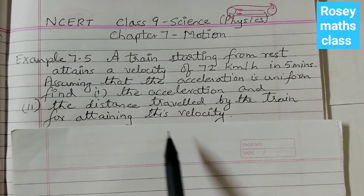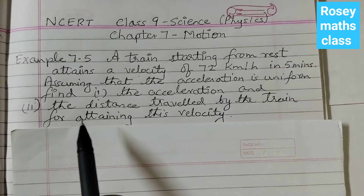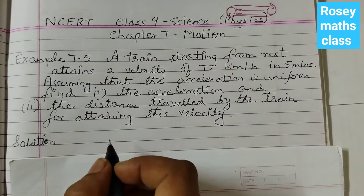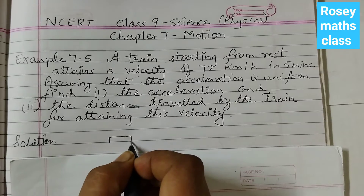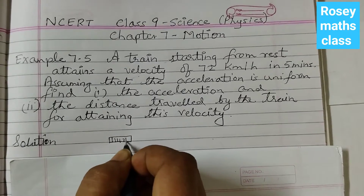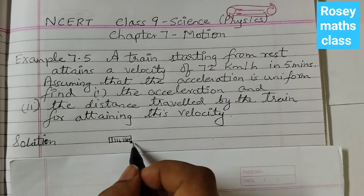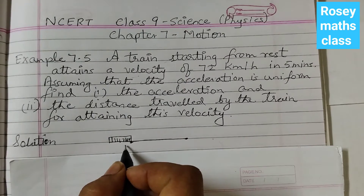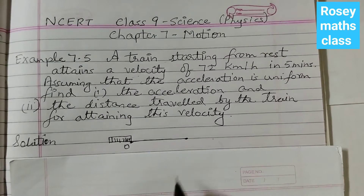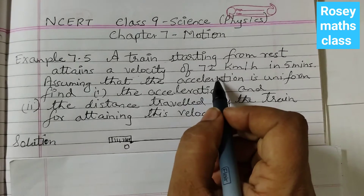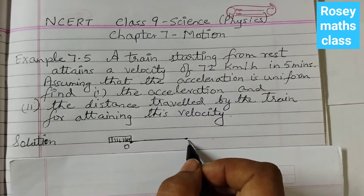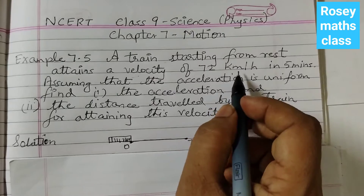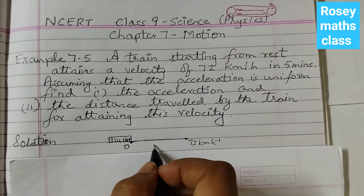In this question we have two parts. The first part we need to find the acceleration, the second part we need to find the distance traveled by the train. Let's draw a rough sketch — this is our train moving from this point to this point. Initially it is at rest so the initial velocity is 0, and then it attains a velocity of 72 km per hour. This takes 5 minutes.